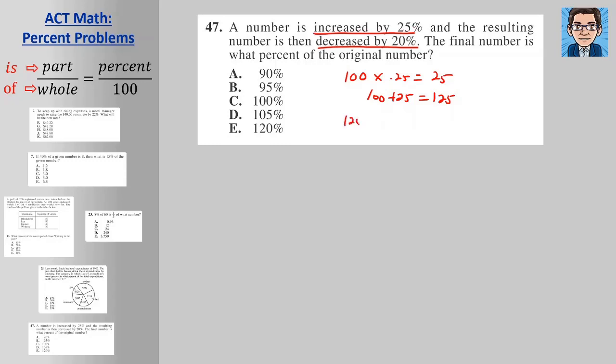Then we're going to take the 125 and decrease it by 20 percent. So 20 percent of 125 gets us 25. So if we decrease it, 125 minus our 25 gets us back to 100. So we started at 100 and got back to 100. So the final number is what percent of the original number? It's 100 percent of the original number.